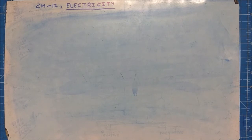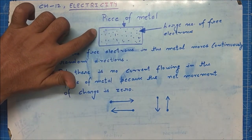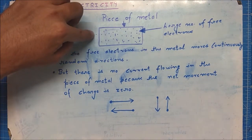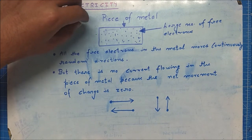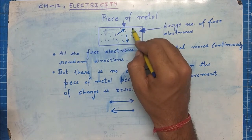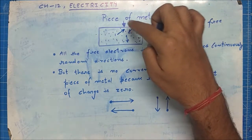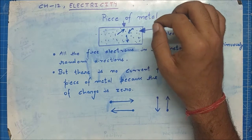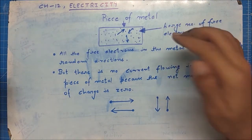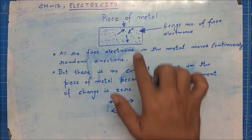Now consider a piece of metal. Inside the metal there are a large number of free electrons, and all these free electrons are continuously moving in random directions. One electron might be moving this way, another in a different direction — they have no particular direction. So as electrons are moving inside this piece of metal, there should be a current flowing, but actually there is no current inside a piece of metal lying around us. Why? Because the net movement of the electrons is zero.